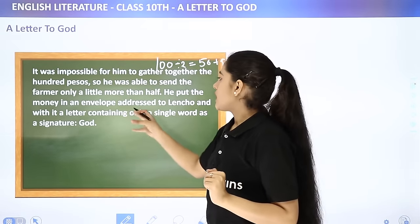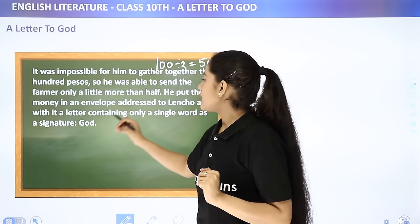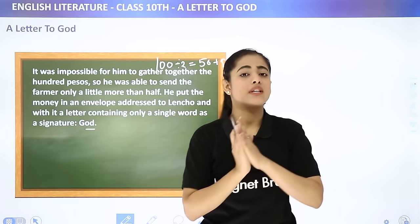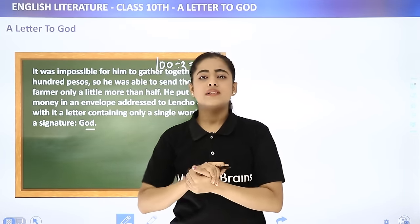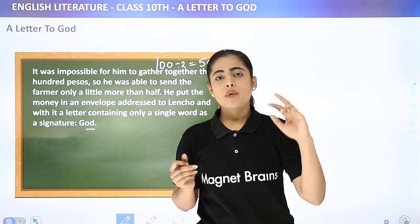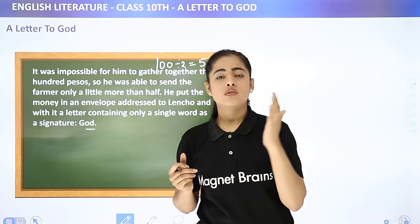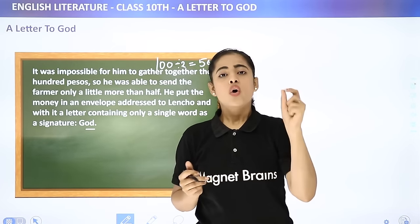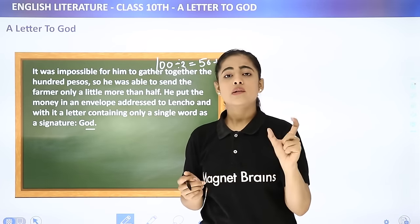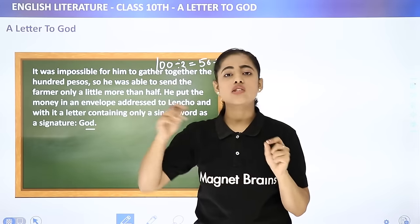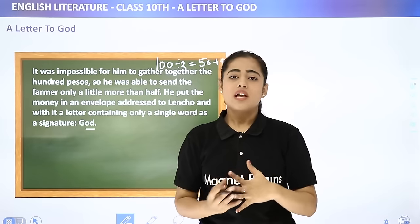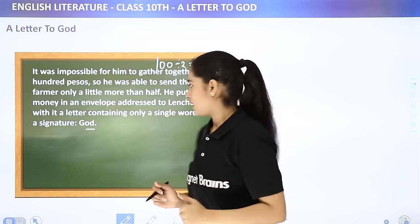He put the money in an envelope addressed to Lencho, and with it a letter containing only a single word as a signature: 'God.' Very beautiful. The postmaster put around 70 pesos in an envelope, included a letter signed only 'God,' so that Lencho would believe that God himself had sent him the money.